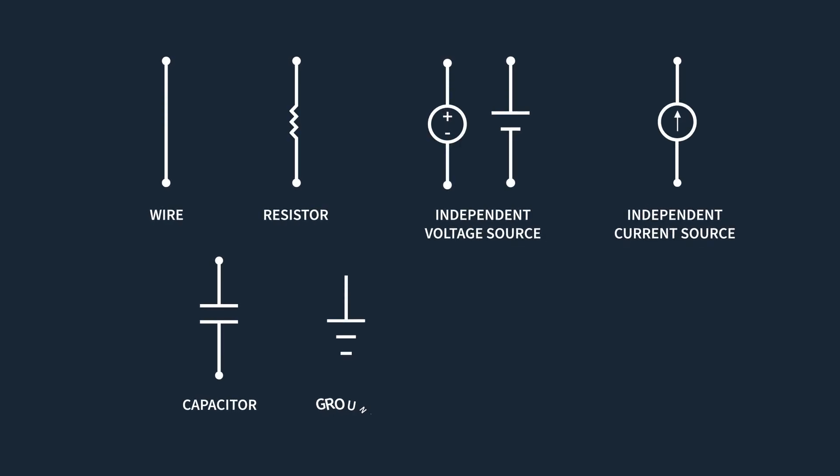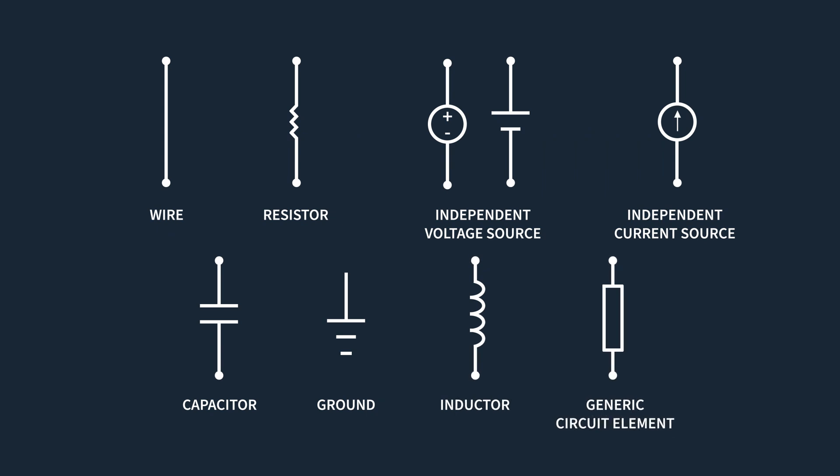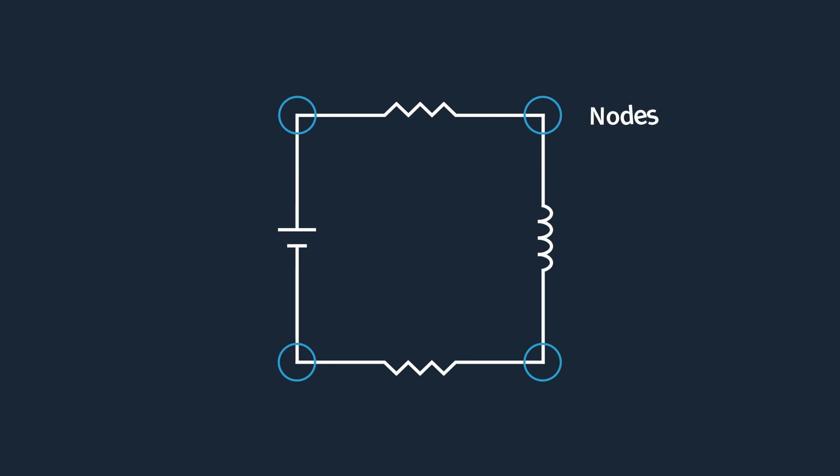Up until now, our focus has been on basic circuits featuring only one circuit element alongside either a voltage or current source. However, while working with circuits having multiple circuit elements or sources, it's important to understand specific terms used to describe certain circuit structures. There are three important terms: branches, loops, and nodes. A branch is any element or source in a circuit — this could include resistors, capacitors, and inductors, as well as voltage or current sources. Nodes, or junctions, form in circuits when components connect to each other or when multiple wires converge; it's a junction that doesn't measurably impede the flow of current. Essentially, nodes represent connection points in the circuit.